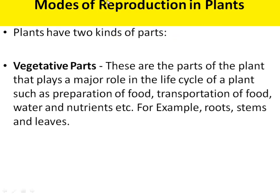Next is the modes of reproduction in plants. There are two main types of reproduction. First is vegetative reproduction, or we can say asexual reproduction. Second is sexual reproduction. The vegetative parts are parts of the plant that play a major role in the life cycle, such as preparation of food, transportation of food, water and nutrients — for example, roots, stem, and leaves.